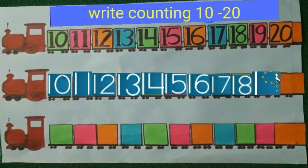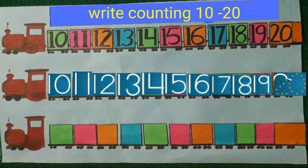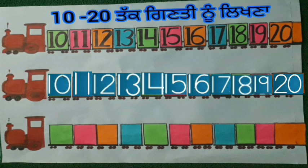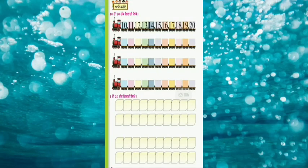Next number is 19. See kids, I am writing number 19. To write number 20, firstly I am writing number 2, then I am writing number 0. Now kids, from page number 56 of your book, you will have to write counting from 10 to 20 on these train boxes. Kids, you will have to write numbers 10, 11, 12 till 20. You have to write counting in beautiful handwriting. Thank you. Bye.